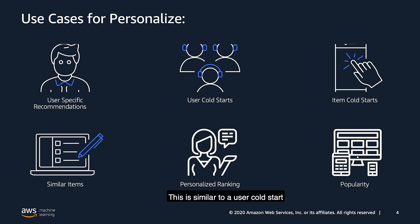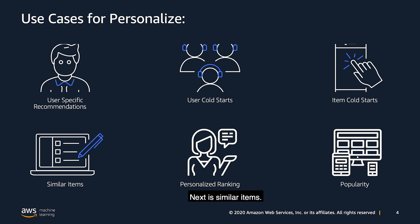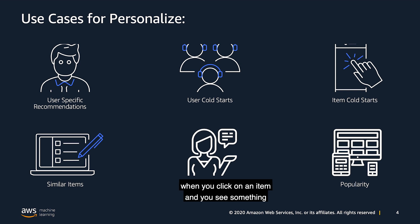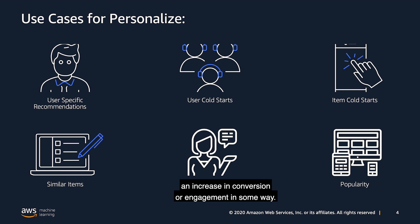Next are item cold starts. Similar to a user cold start, Personalize doesn't know much about the item, but we're trying to figure out how to promote a new item. We can use exploration parameters that allow Personalize to quickly see how users engage with new content and make informed decisions about placement. Next is similar items — not based on metadata similarity, but on how users engage with content in similar ways. Think of the classic retail scenario where you see 'customers frequently bought together.' That's what we're addressing with SIMS. There's also personalized ranking, where you take a curated collection of items and Personalize ranks them by what's most probably interesting to your user, generally driving an increase in conversion or engagement. And lastly, popularity — the top most popular items based on user behavioral data — which we consider our baseline for measuring Personalize performance.